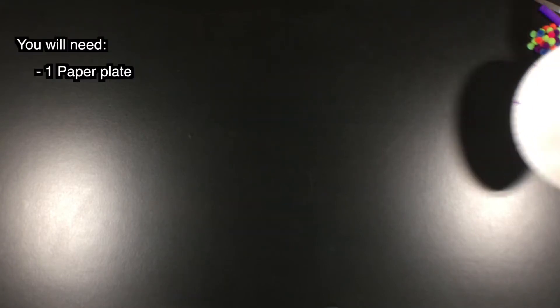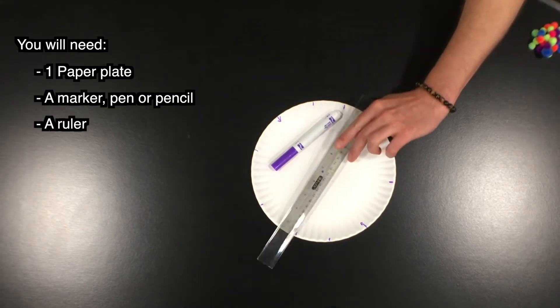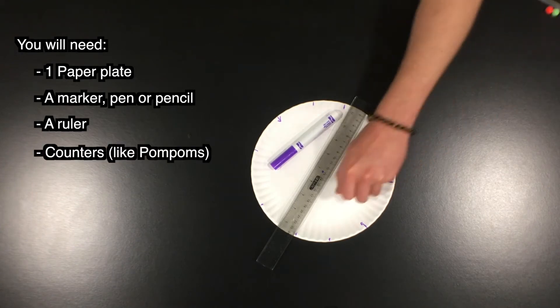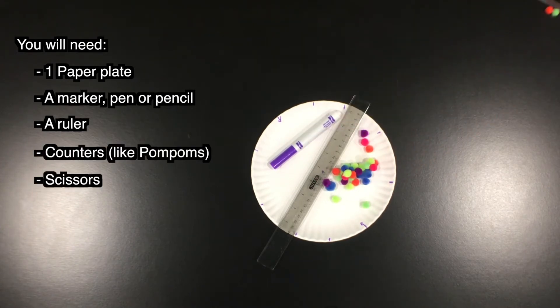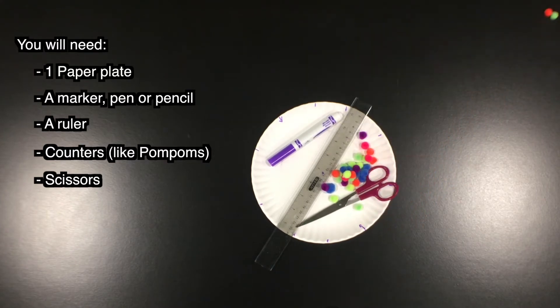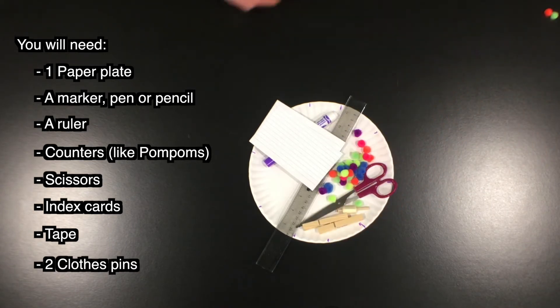For this activity you're going to need one paper plate, something to write with, a ruler - you have a paper one in your box - an assortment of counters, some scissors but you can also tear so don't worry if you don't have scissors, some index cards, a small roll of tape, and two clothespins.